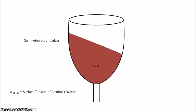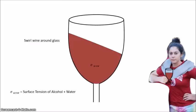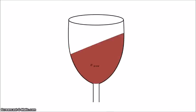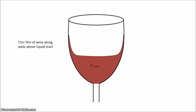Let's take a closer look at the physics behind the Marangoni effect. First, we start with a glass of wine. The wine has a surface tension, sigma, given by the surface tension of alcohol and water. Now swirl the glass. This produces a thin film of wine above the liquid level. Evaporation occurs quickly in the thin film due to the high surface area.